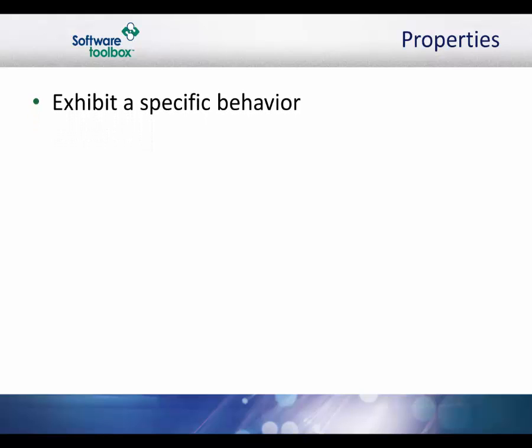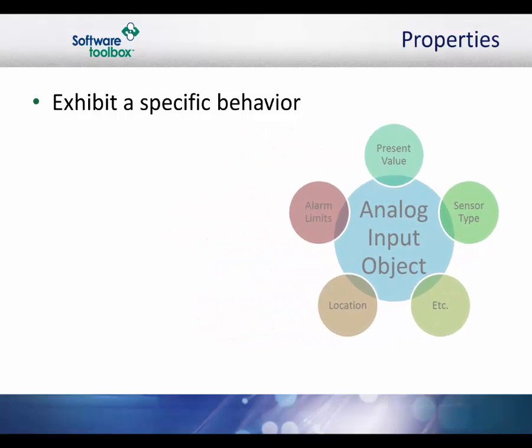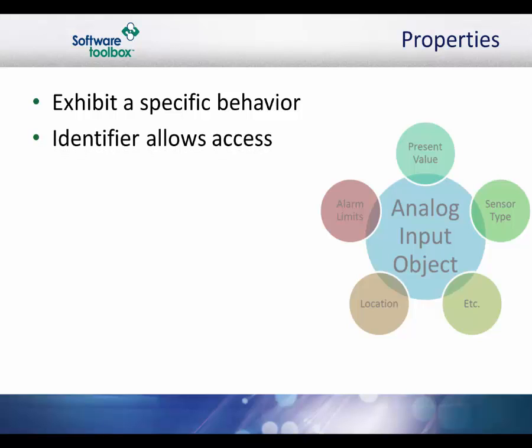Each property of an object has a specific behavior. For instance, each analog input is represented by a BACnet analog input object, which has a set of standard properties. These properties include things like present value, sensor type, location, alarm limits, and so on. Some of these properties are required, while others are optional. One of an object's most important properties is its identifier, a sort of numerical name that allows BACnet to easily access it. BACnet does allow vendors to add proprietary properties, but as with proprietary objects, the proprietary properties may not be understood or accessible by equipment from other manufacturers.